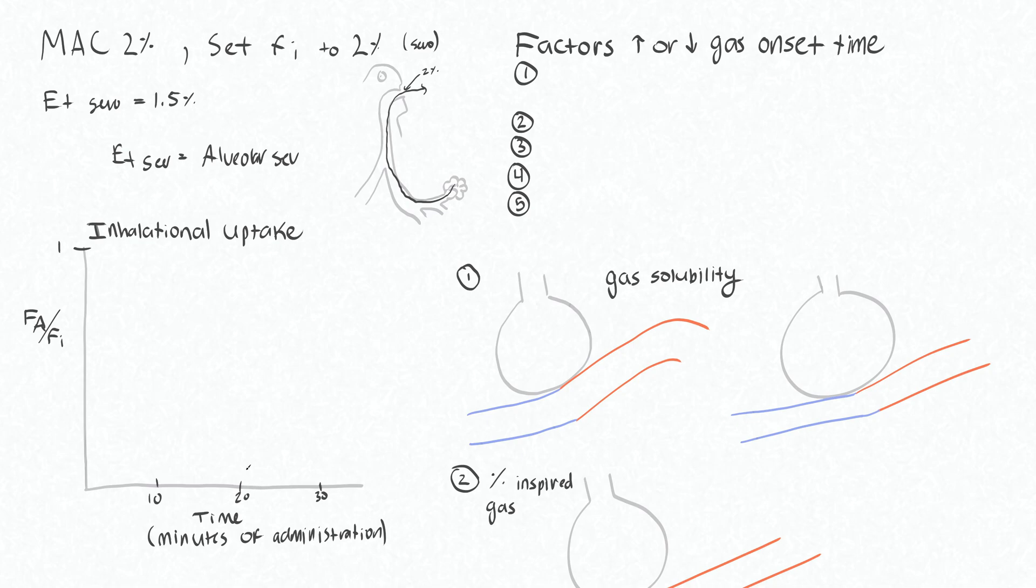For sevoflurane, this curve will look something like this, where it will take a number of minutes of breathing this gas to start increasing the amount of gas that's left over in the alveoli and therefore what the estimated concentration of that gas is at the central nervous system.